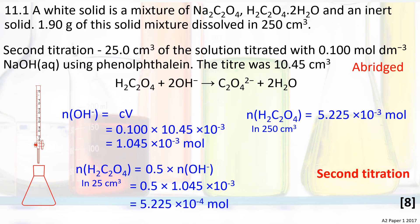We follow a similar approach for the second titration. Work out the amount of hydroxide ions using concentration and volume. This works out to be 1.045 × 10⁻³ moles.